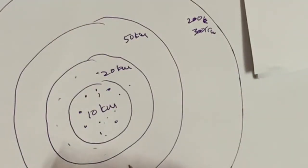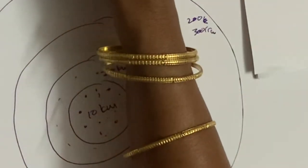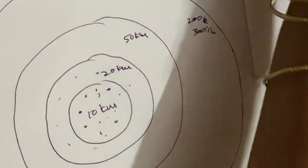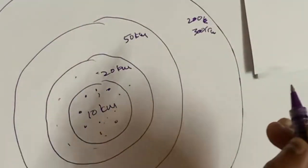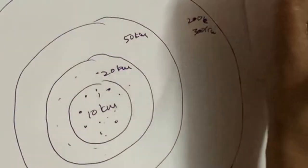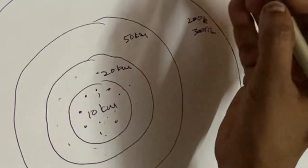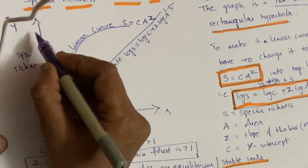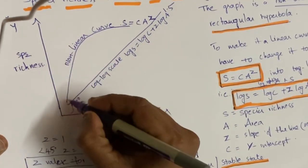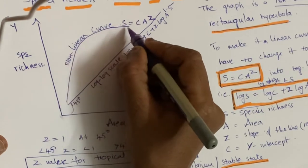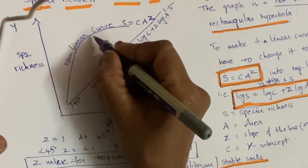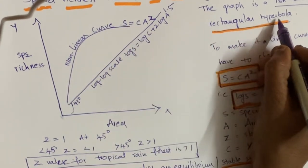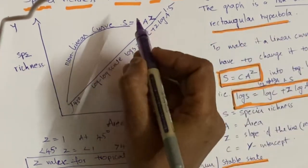This is very important for board examinations: species richness increases with increasing area only up to a certain limit, after which it becomes equilibrium or attains a stable state. If we draw a graph taking area on the x-axis and species richness on the y-axis, we will get a rectangular hyperbola — a nonlinear curve in the shape of a rectangular hyperbola.